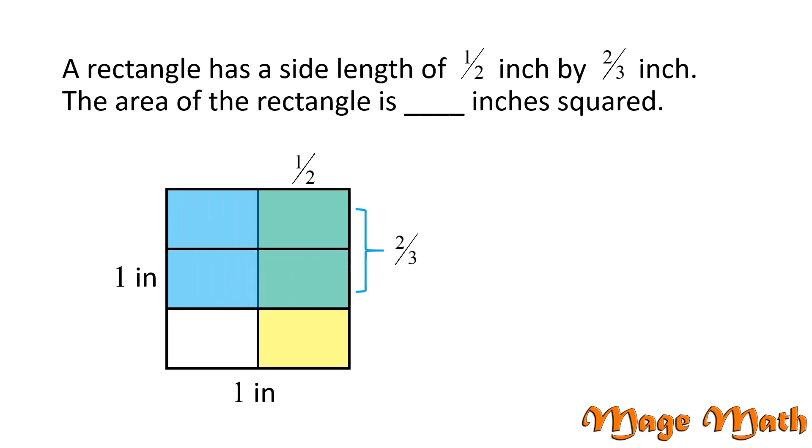The overlapping shaded region is the answer to our problem. How many smaller rectangles are shaded green? There are 2 out of 6 smaller rectangles that are shaded green. Therefore, 1/2 times 2/3 equals 2/6.